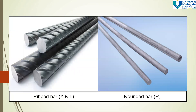This is the shape of the bar. This is the ribbed bar, marked as Y and T — you can see the pattern of the bar. This one is the rounded bar, marked as R, with a strength of 250 Newton per millimeter square.